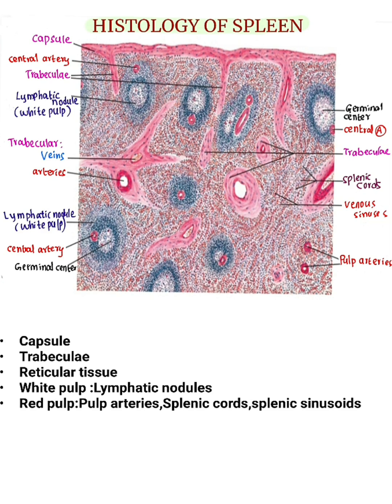The red pulp forms the major part of the splenic parenchyma. It consists of pulp arteries, splenic cords, and splenic sinusoids. Pulp arteries are branches of the central artery. Splenic cords are irregular anastomotic cords — they are the lymphatic tissue present between the white pulp and blood sinusoids.